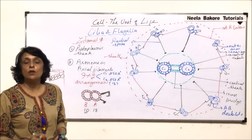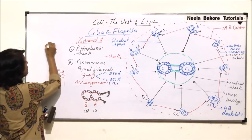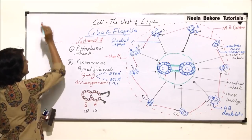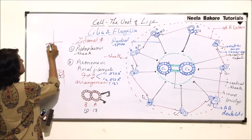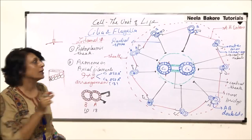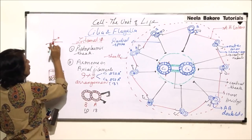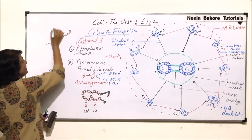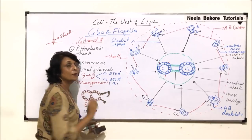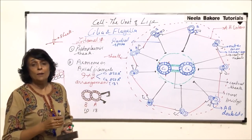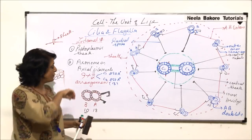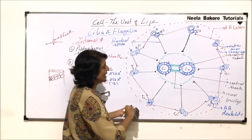When a cilium or flagellum arises from the basal body or basal granule, the plasma membrane forms a fold which covers the base of the cilium or flagellum. This fold is actually the protoplasmic sheath, so it is only the basal part that is covered with the membrane, not the entire filament.